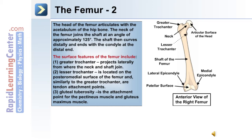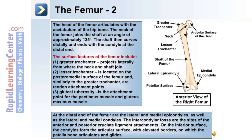Number three, the gluteal tuberosity. This is the attachment point for the pectineus muscle and the gluteus maximus muscle. At the distal end of the femur are the lateral and medial epicondyles as well as the lateral and medial condyles. The intercondylar fossa are the sites of anterior and posterior cruciate ligament attachments. On the inferior surface, the condyles form the articular surface with elevated borders on which the patella bone articulates and glides.